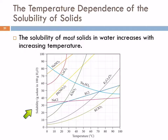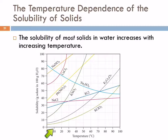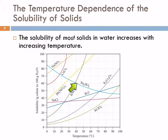So here's temperature dependence. Most solids are more soluble at higher temperatures. If we look at something like potassium nitrate, at 10 degrees Celsius you can dissolve 20 grams of potassium nitrate in 100 grams of water. If you increase the temperature to 40 degrees, now you can dissolve over 60 grams in that same amount of water.